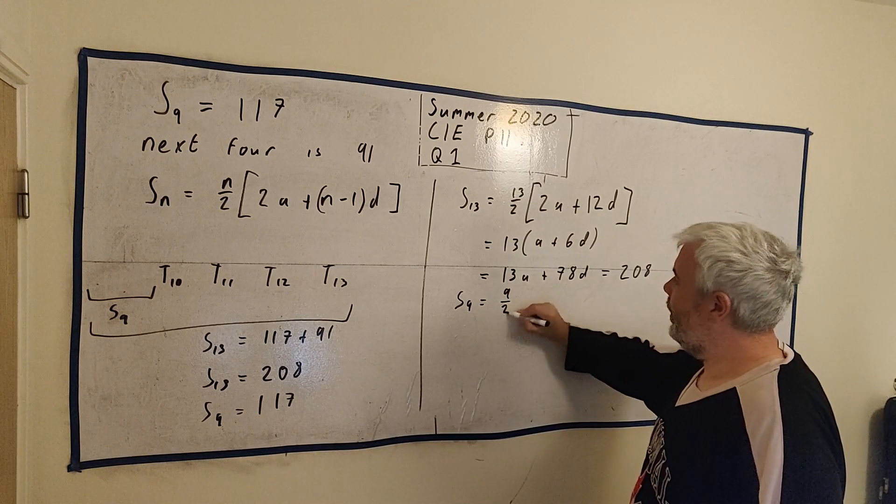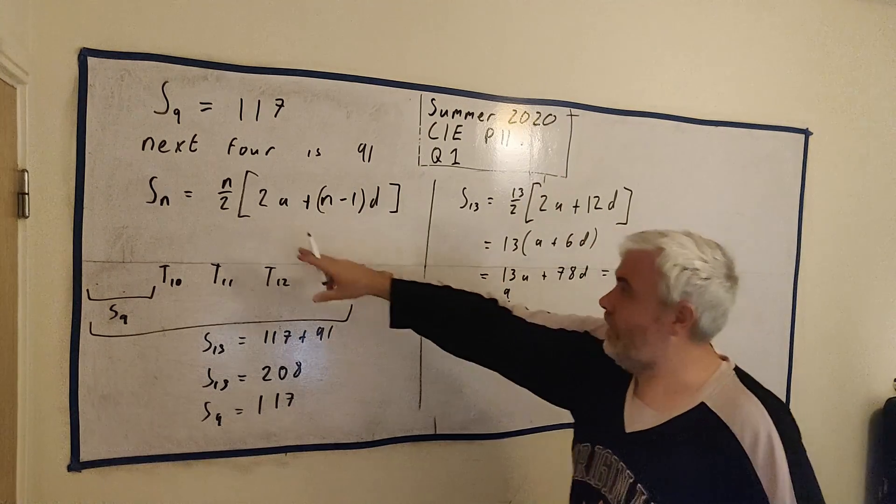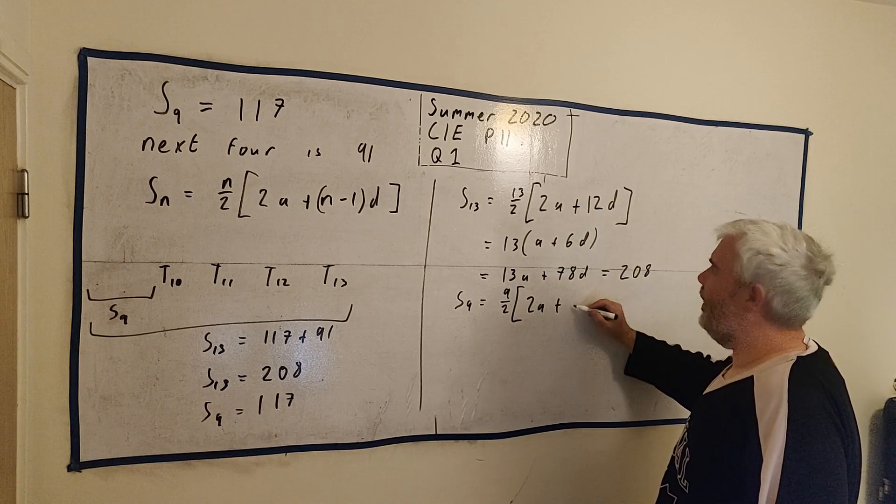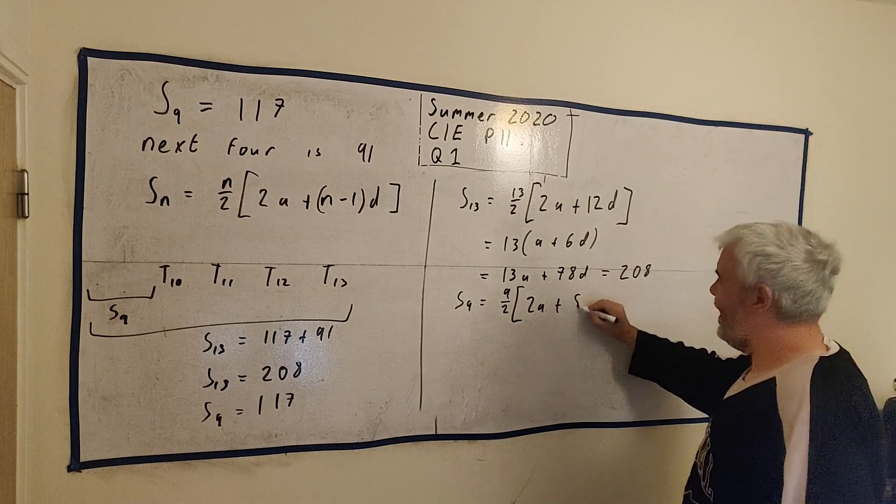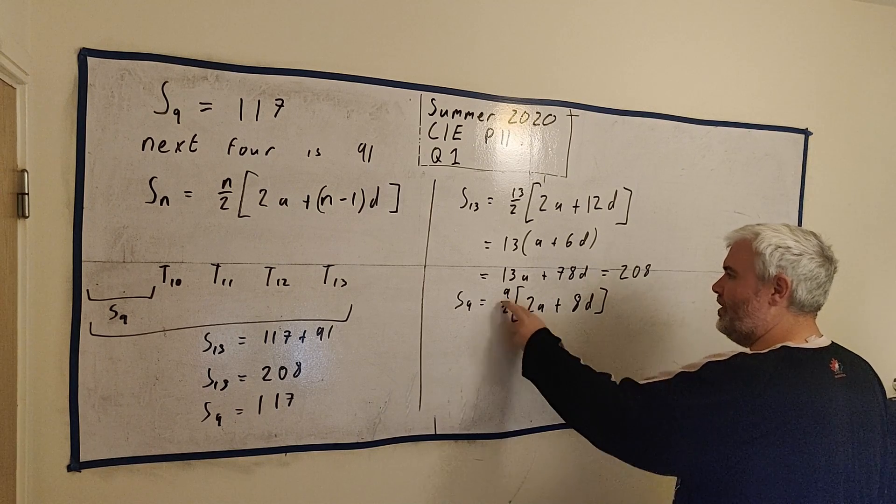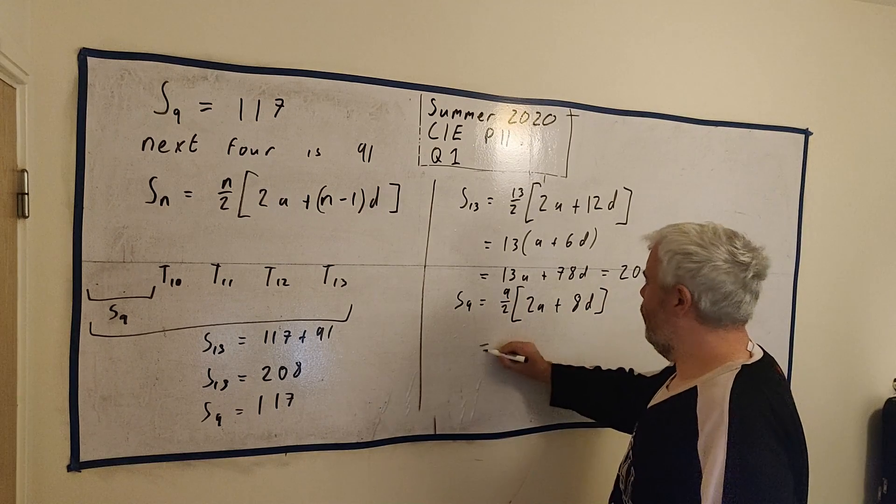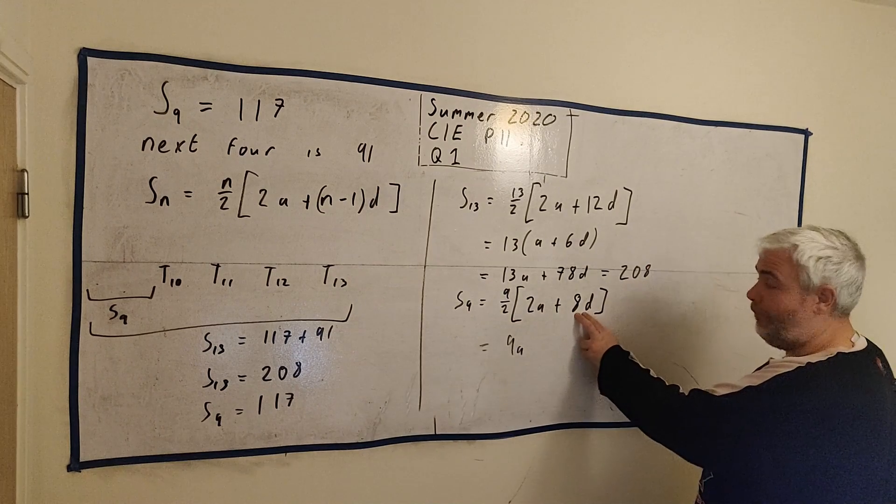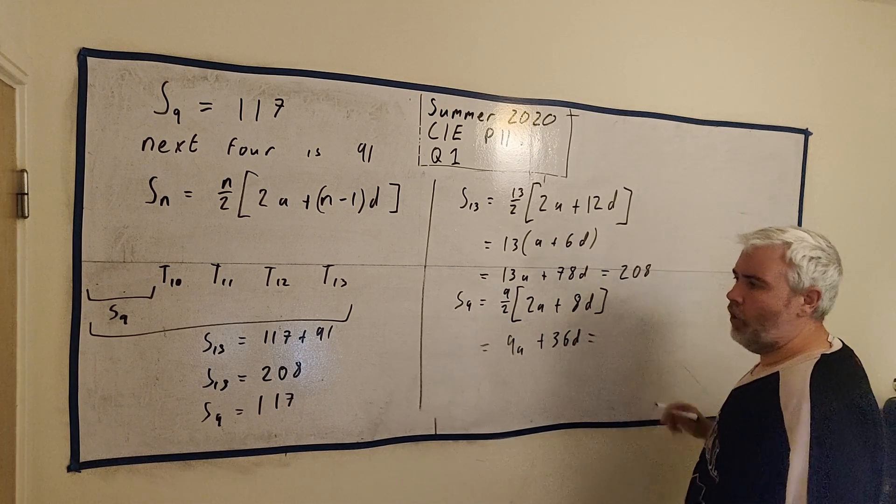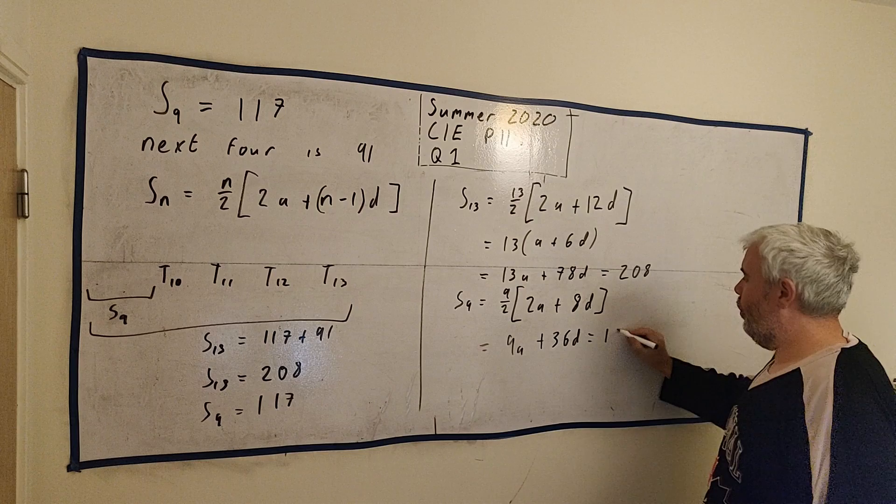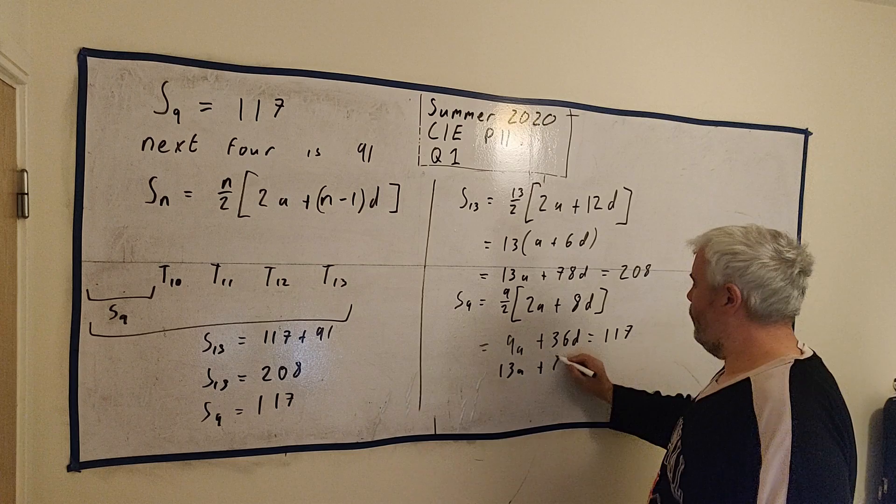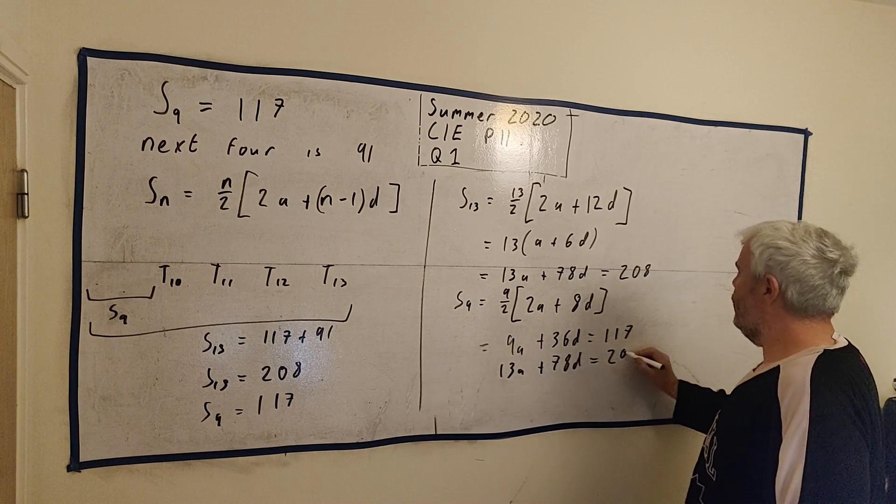S₉ is equal to 9 divided by 2. That's just n here. n is 9 now. And multiply by 2, we still don't know what a is. 9 minus 1 is 8. We still don't know what d is. Let's clean this up. I'll be a bit faster this time. 2 divides in, 9 multiplies in, we get 9a plus 36d. And we know that S₉ equals 117.